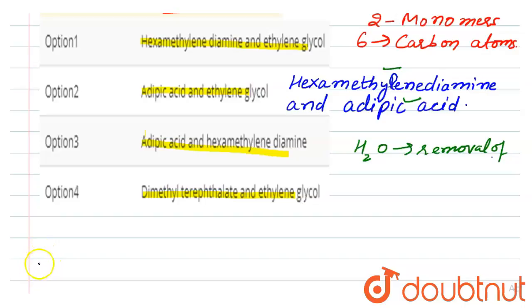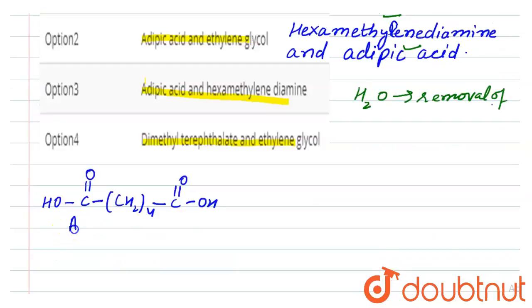So the formula of adipic acid is HO-C(=O)-(CH2)4-C(=O)-OH. It is the formula of adipic acid, plus H-N-